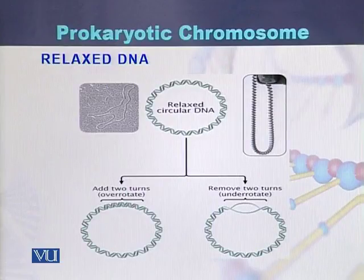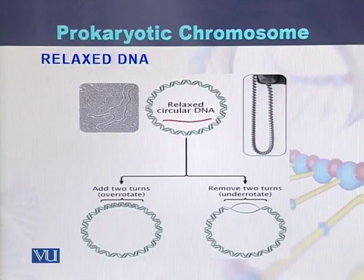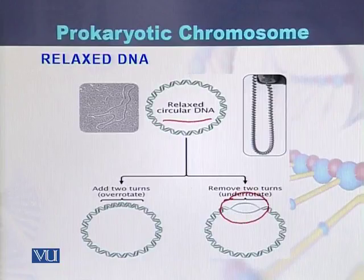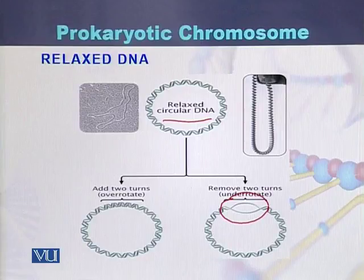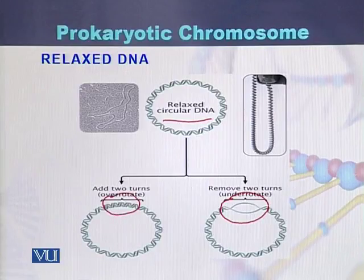Here we can see the structures of both. This is a relaxed circular chromosome. If two turns are removed, the DNA forms a bubble while both strands of the DNA separate from each other. On the other hand, if there are two additional turns, then the DNA goes into over-rotating.